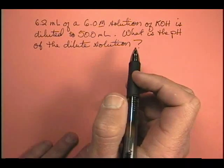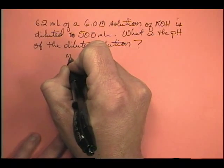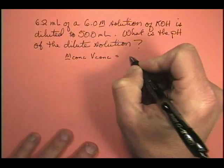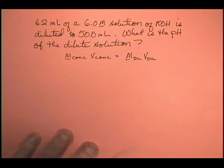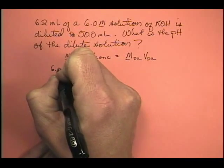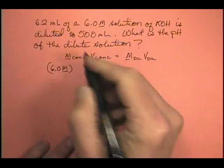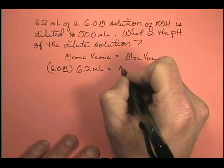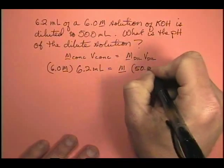So let's first do the dilution, then we'll figure out the pH. Remember, we use the molarity of the concentrated solution times the volume of the concentrated solution equals the molarity of the dilute solution times the volume of the dilute solution. We know the molarity of the concentrated solution is 6.0 molar, the volume is 6.2 milliliters, and that equals the molarity of the dilute (unknown) times the volume of the dilute, which is 50.0 milliliters.